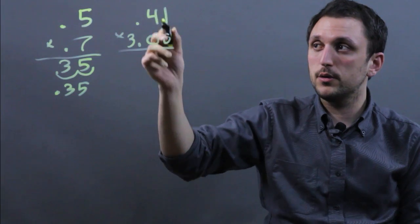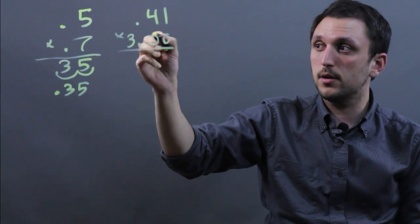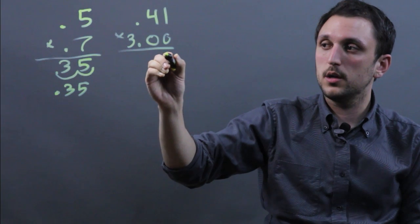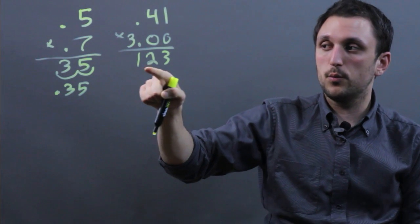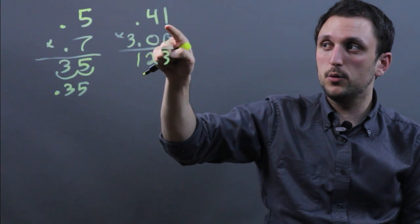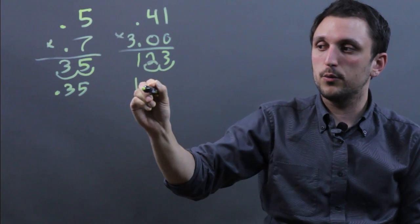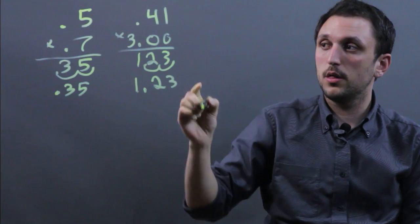So 1 times 0 is 0, 4 times none of this is going to matter. And we start with 1 times 3 is 3, 4 times 3 is 12. So we have 1, 2, 3 and we're going to move the decimal 1, 2 times. So it's 1.23.